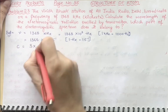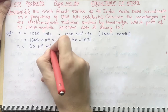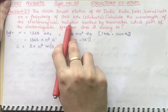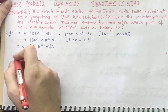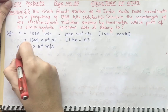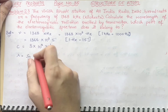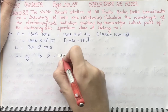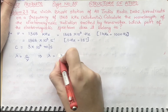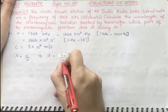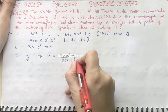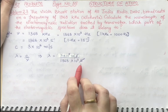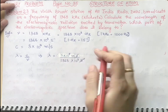We know that c, the velocity of light, is 3 × 10⁸ meter per second. The wavelength of electromagnetic radiation is given by the formula: λ = c / ν. Putting in the values: λ = (3 × 10⁸ m/s) divided by (1368 × 10³ s⁻¹). The units of second inverse cancel out, leaving only meters.